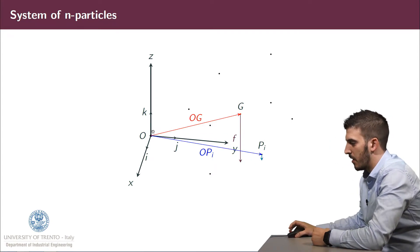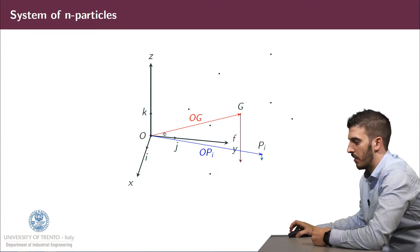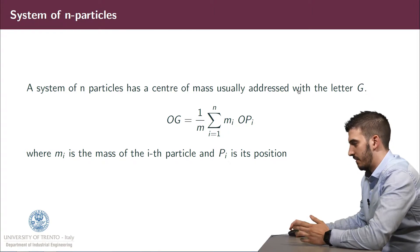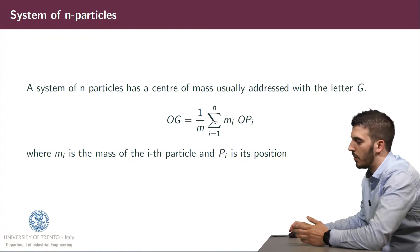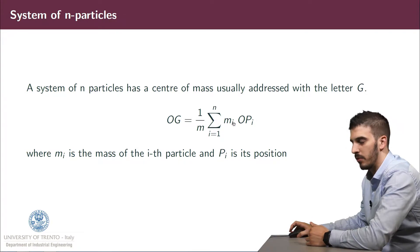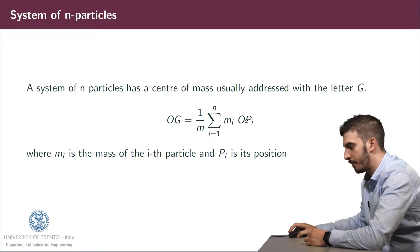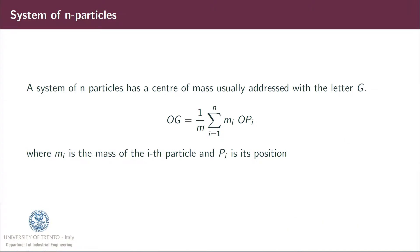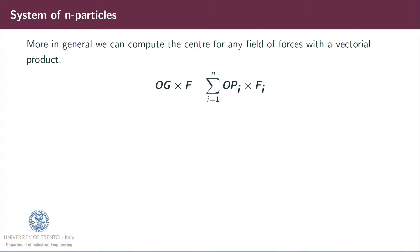We define the distance from the origin OG and the distance from the origin of the i-th point as OPi. For a system of M particles, the center of mass is defined as OG equal to 1 over M times the sum from i equal to 1 to N of mi·OPi, where mi is the mass of the i-th particle and Pi is its position. More in general, we can compute the center of mass for any field of forces with a vectorial product: OG cross product F equal to the sum of OPi cross product Fi.